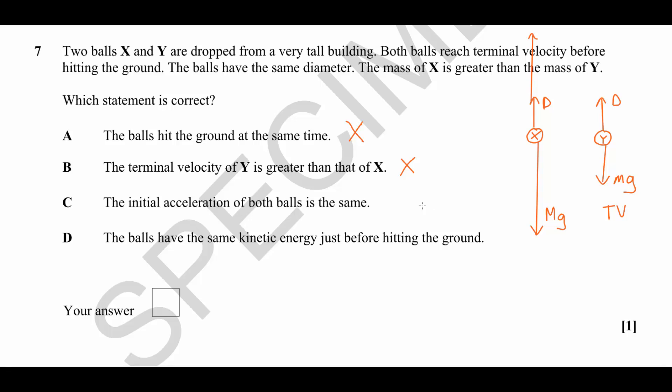Part C: the initial acceleration of both balls is the same. Well, we know that two objects when they're dropped from rest have an acceleration equal to 9.8 meters per second squared. So we know this to be correct.